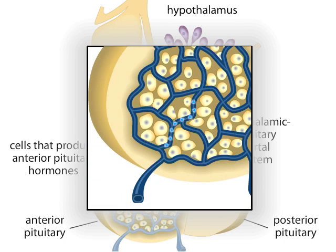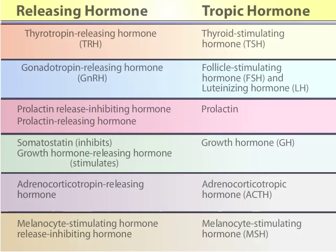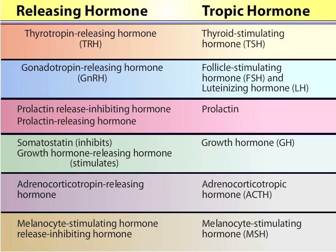Once released, the anterior pituitary hormones travel throughout the body to their various targets. The hypothalamic hormones are generally called releasing hormones, because most of them trigger the anterior pituitary to release hormones. Some, however, inhibit hormone release, as indicated by their specific names.